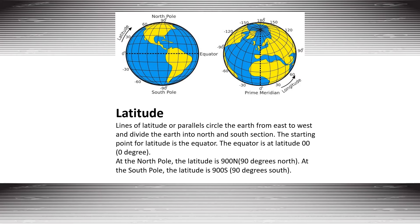Lines of latitude divide the earth into north and south sections. The starting point for latitude is the equator. The equator is latitude zero, or zero degrees. Please take note of all the measurements that you have seen from the screen.